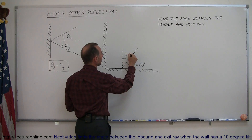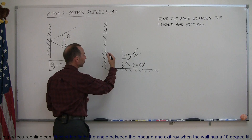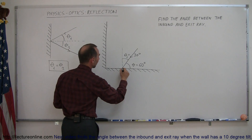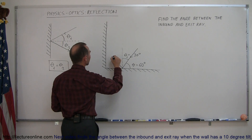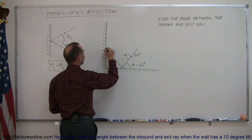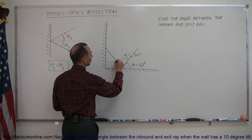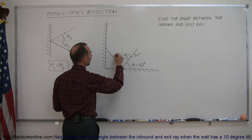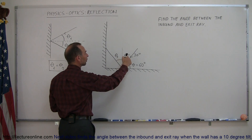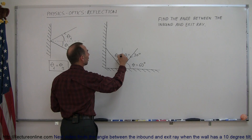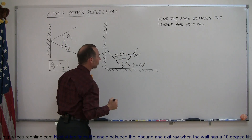then the angle of incidence with the normal must be 30 degrees. The ray reflects in this direction until it hits the second surface. The reflected angle theta sub 2 must also equal theta sub 1, which is 30 degrees.